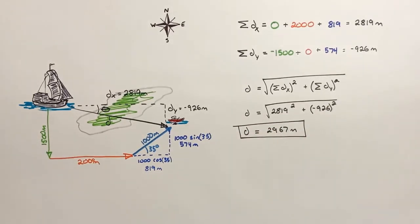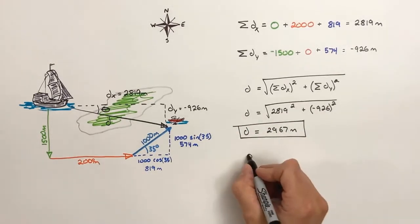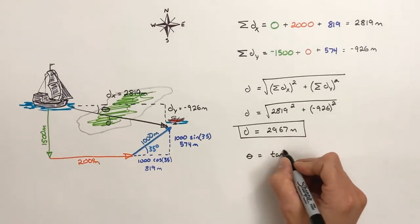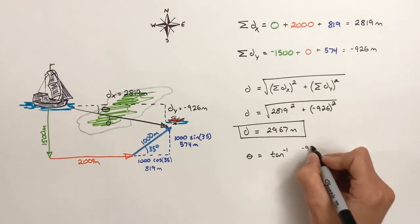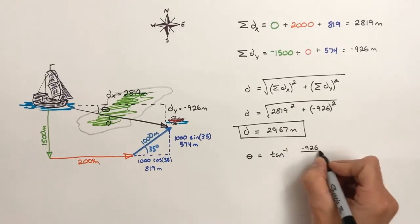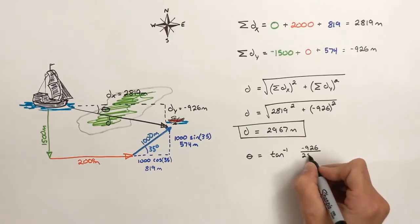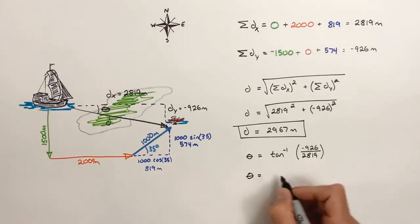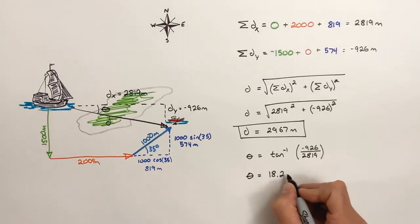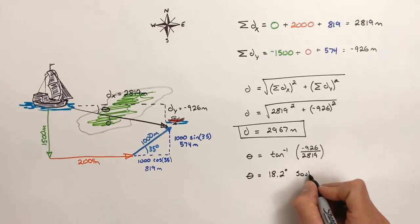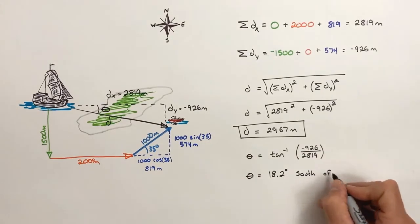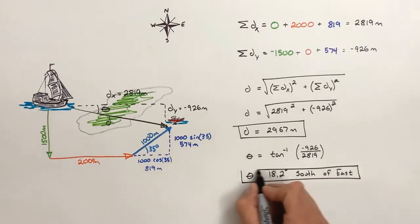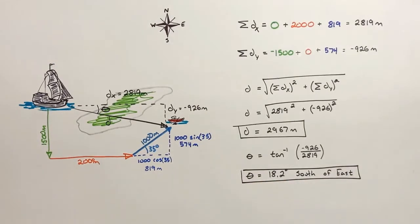In order to find the direction in which the ship travels, we can use the inverse tangent and the magnitude of the x and y displacements to solve for the direction. We find that direction is 18.2 degrees — that's 18.2 degrees below the positive x-axis, which on a map we would say is south of east.